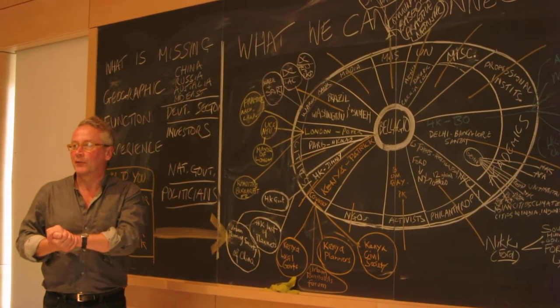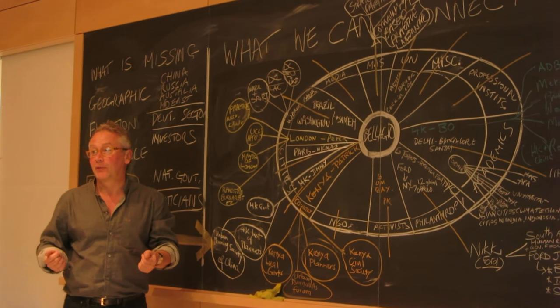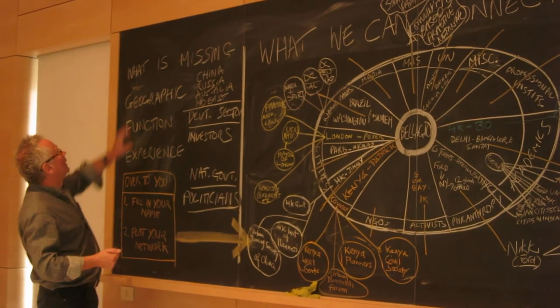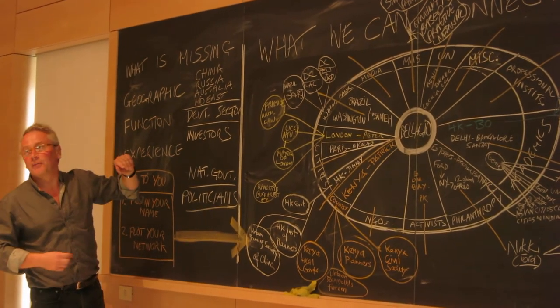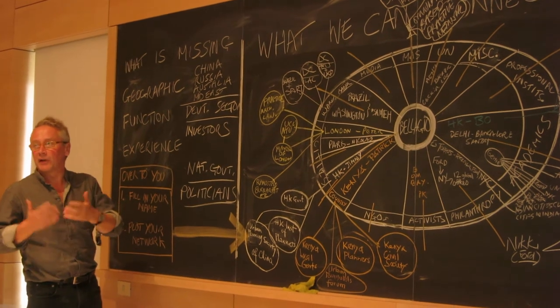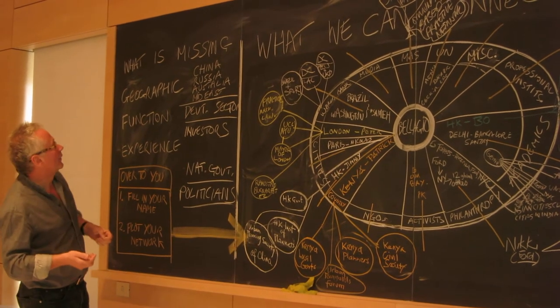First of all, it works out where we have overlaps, secondly, it works out where we don't have overlaps. And possibly, finally, it defines what's actually missing if we are going to build a kind of very robust network out of this.